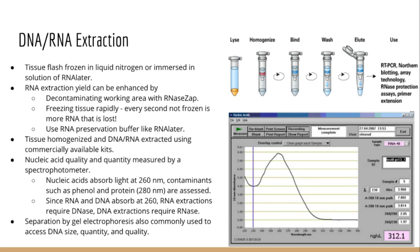This helps stop the initial degradation of RNA and gives you more time to get it out of the brain and then flash frozen. In order to actually extract your RNA or DNA, you want to first homogenize your tissue — this is typically done in a mortar and pestle where you physically grind up the tissue, lysing the cells into a fine powder.